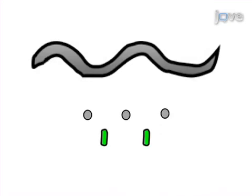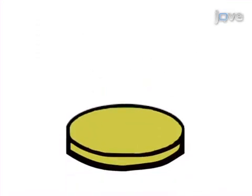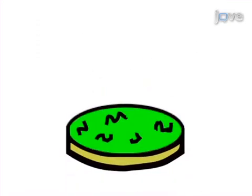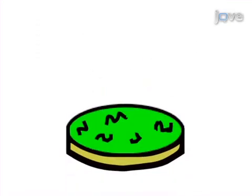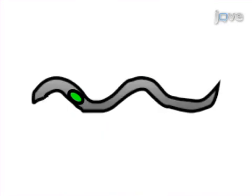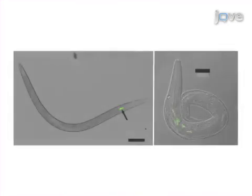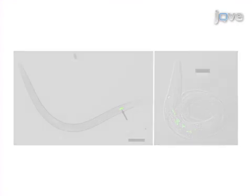Next, the axenic nematodes are grown in combination with their fluorescently labeled bacterial symbiont to allow natural association. Ultimately, the localization of the bacterial symbiont within the nematode host and the frequency of this association within the nematode population can be determined by fluorescence microscopy.